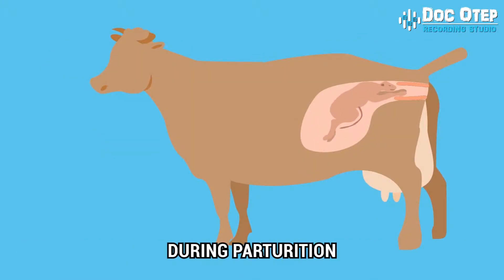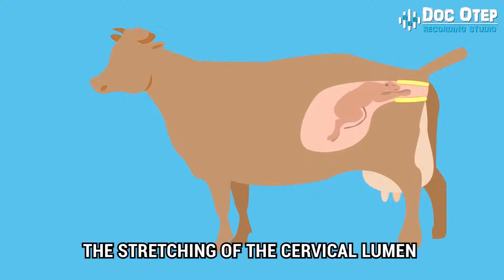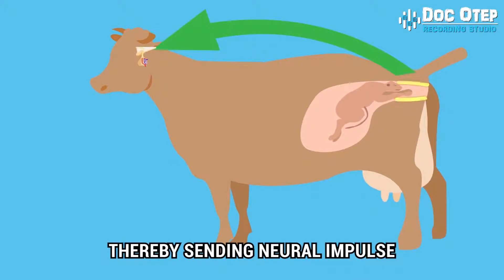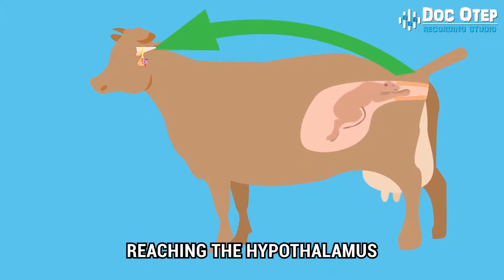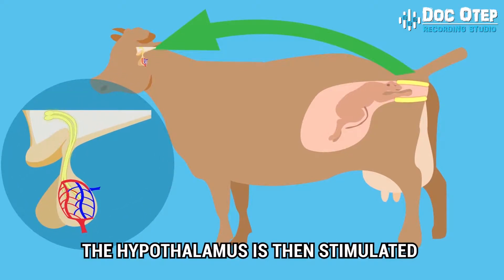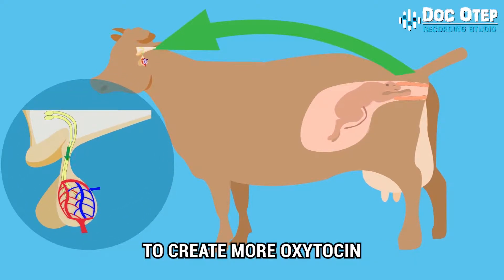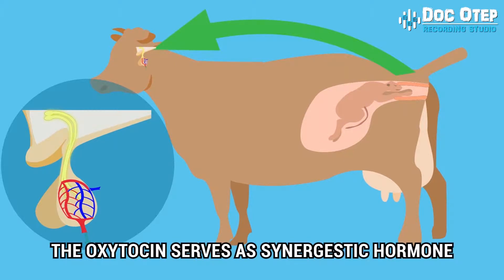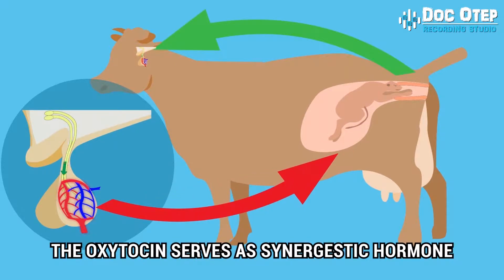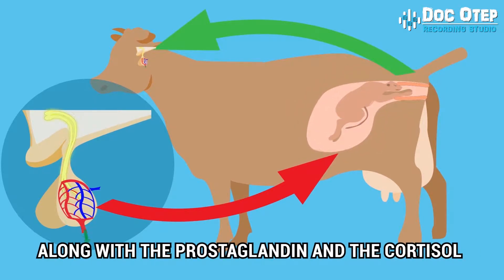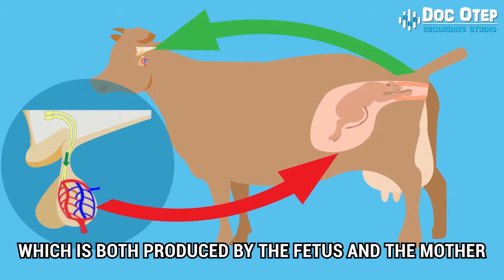During parturition, the stretching of the cervical lumen causes stretch receptors to be stimulated, sending neural impulses to the hypothalamus. The hypothalamus is then stimulated to create more oxytocin, and the pituitary gland releases it. Oxytocin serves as a synergistic hormone for uterine contraction during parturition, along with prostaglandin and cortisol, which are produced by both the fetus and the mother.